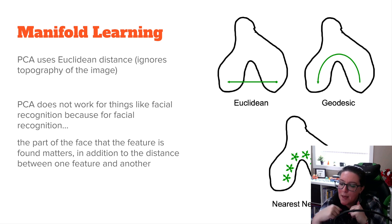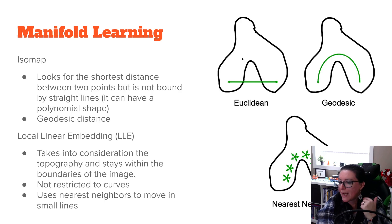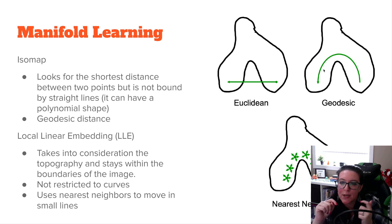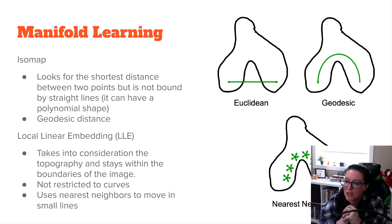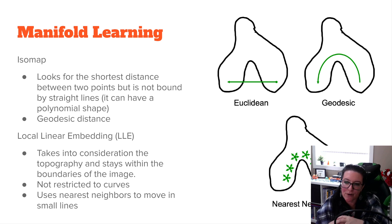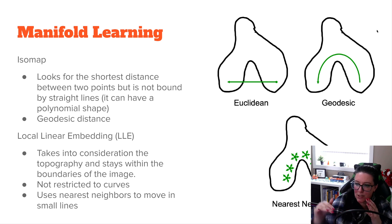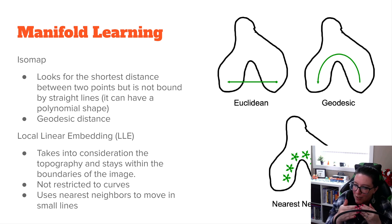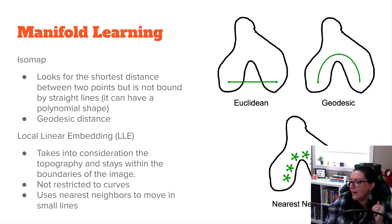When it comes to manifold learning methods, the Isomap approach uses geodesic distance. It looks for the shortest distance between two points and is not bound by a straight line — it can have a polynomial shape, taking into consideration the topography. Whereas LLE, local linear embedding, also takes into consideration the topography and stays within the boundaries of the image, but it uses nearest neighbors. It makes a short movement in a small line to see what's nearby, then moves there to see what's near that — creeping along, discovering data points while staying within the boundary.